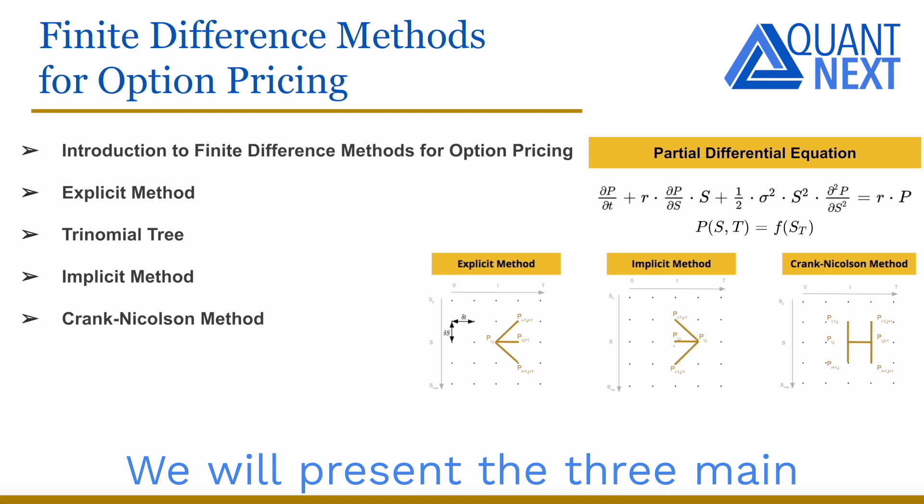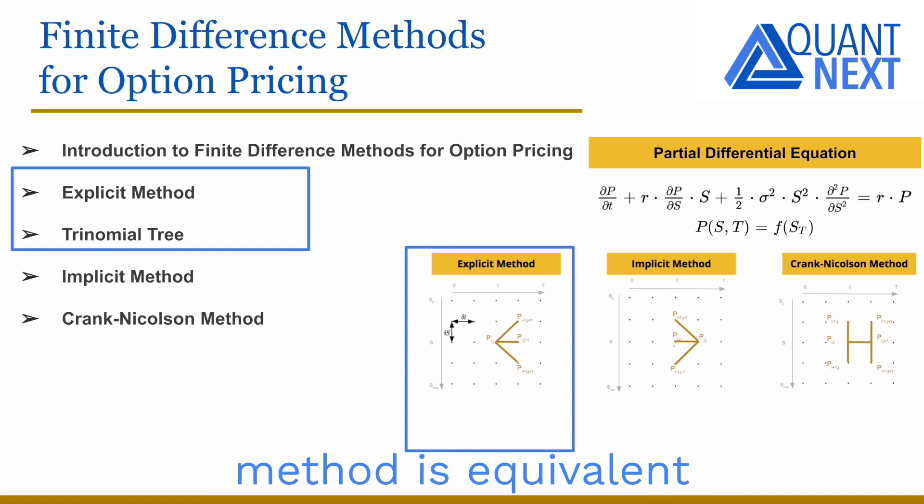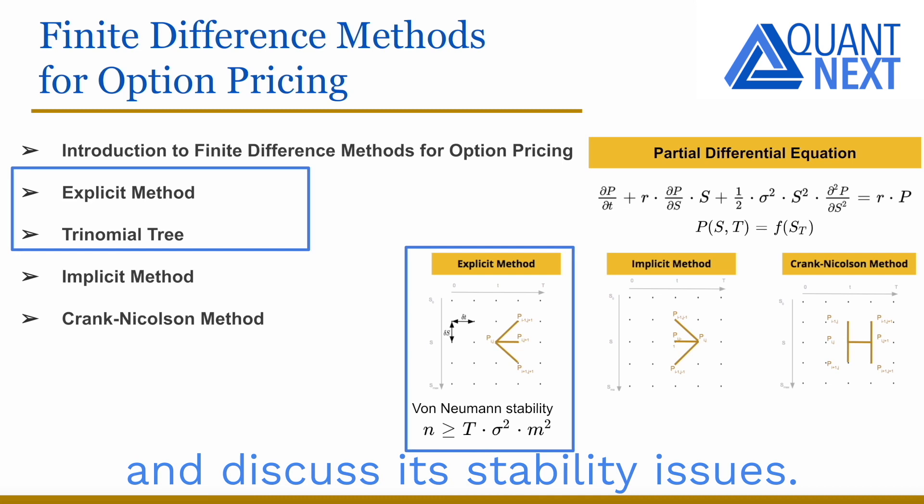We will present the three main methods: explicit, implicit, and Crank-Nicolson. We will show that the explicit method is equivalent to the trinomial tree approach and discuss its stability issues.